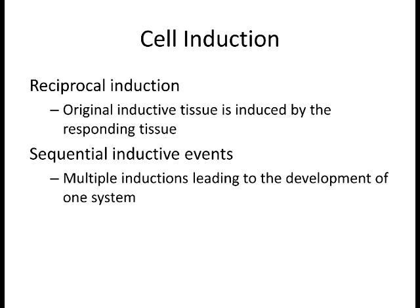A cell can't respond to the second protein until the first has done its job. Sequential induction events are really how most things develop in you and I—it's never just one type of induction. It's this, then this, then this, and that's ultimately what causes these tissues to go down their particular fate: multiple inductive events that develop the system overall. It's a very complex process.